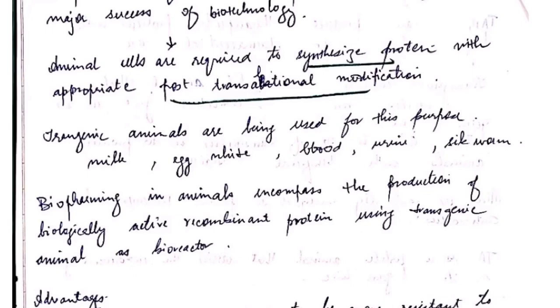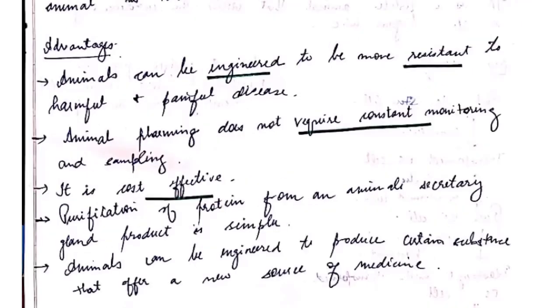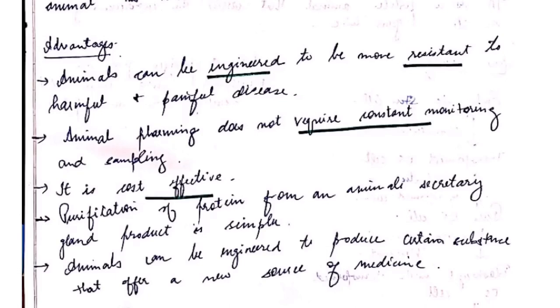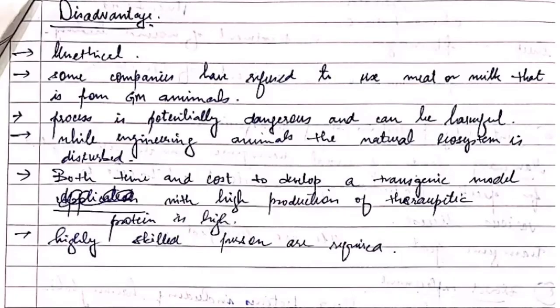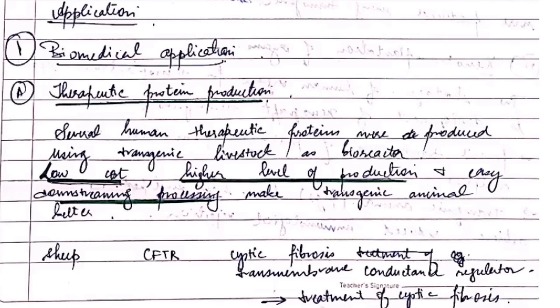Transgenic animals are used to produce milk, egg white, blood, and silk worms. Some advantages are that it is cost effective, purification of protein from an animal secreting gland product is simple, and animals can be engineered to produce certain substances. Some disadvantages are that it is unethical and highly skilled persons are required to make the therapeutic protein, which requires high time and a lot of cost.